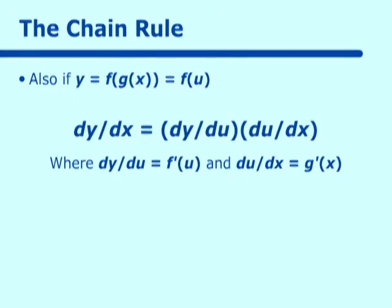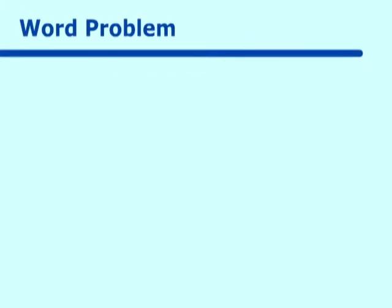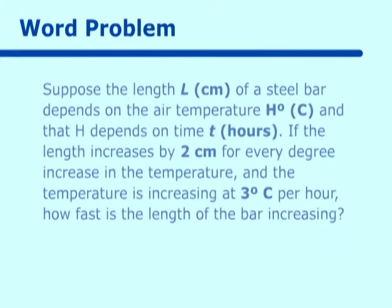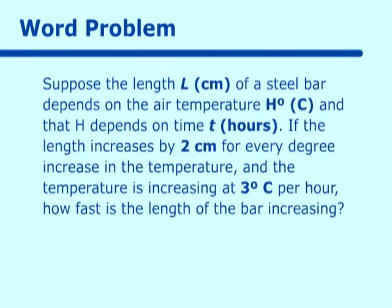Let's try a word problem to nail this down. Suppose the length L, in centimeters, of a steel bar depends on the air temperature, h degrees centigrade, and h depends on time in hours. You can see the composite idea forming — one is dependent on another. If the length increases by two centimeters for every degree increase in temperature, and the temperature is increasing at three degrees centigrade per hour, how fast is the length of the bar increasing?